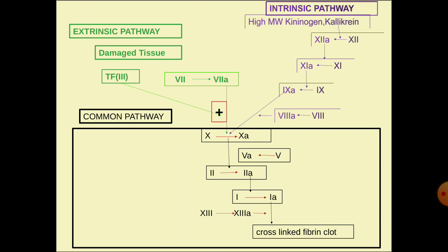In the intrinsic pathway, high molecular weight kininogen and kallikrein activate factor 12 to factor 12a. This activated factor 12 activates factor 11 to factor 11a. Activated factor 11 activates factor 9 to factor 9a. Activated factor 9, along with activated factor 8, then activates factor 10 to factor 10a, where the common pathway continues.